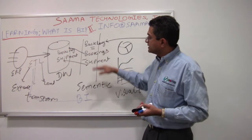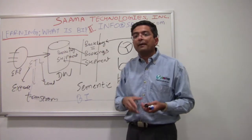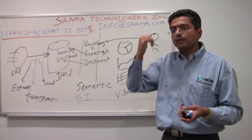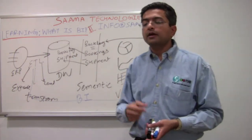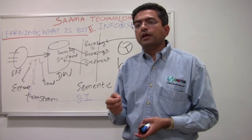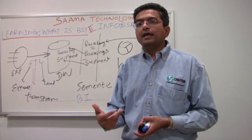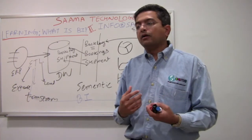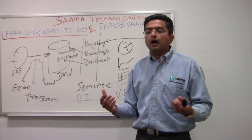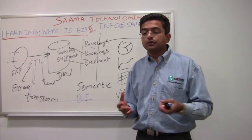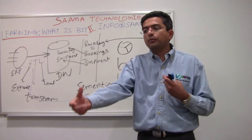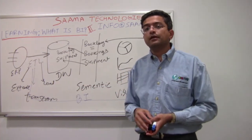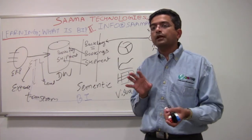From there, I have the semantic layer, which allows me to abstract a business concept. For example, backlog equals booking minus shipment. We are trying to explain what backlog is from an end user point of view, from a business point of view. The bookings and shipment could be technical terms, and booking itself might be a combination of multiple fields in the underlying database — and I'm completely removed from that.